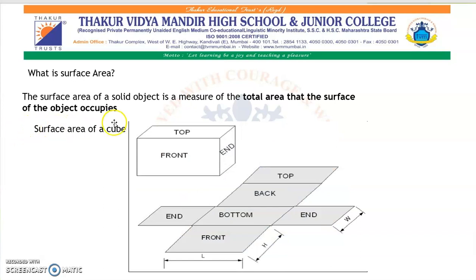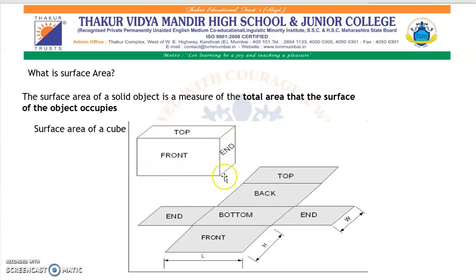What is surface area? The surface area of a solid object is a measure of the total area that the surface of the object occupies. Suppose I keep this cube — the space occupied by its surface is called the surface area of a cube.